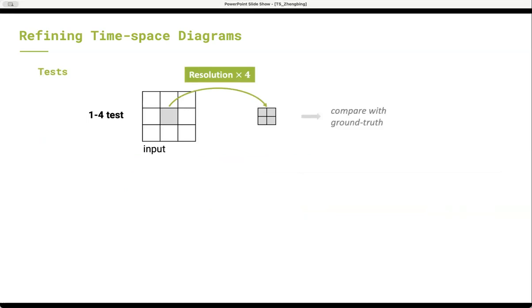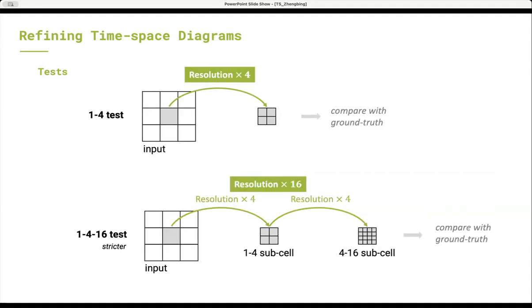Moreover, we do two tests. The first test is called 1-4 test. That is, given a time-space cell, we estimate the traffic speed of its four homogeneous sub-cells so that the resolution of the corresponding time-space diagram is increased four times.